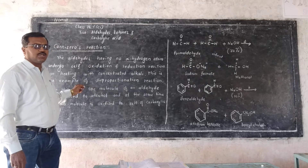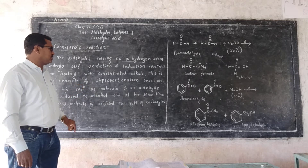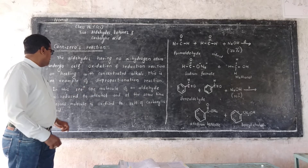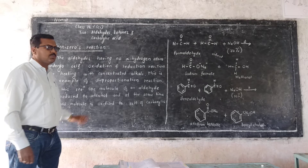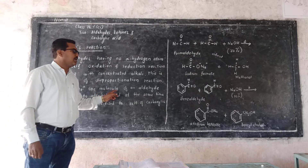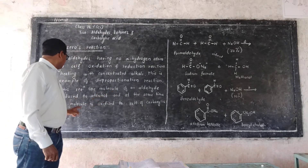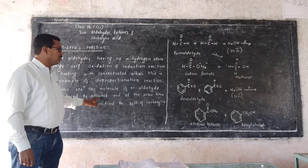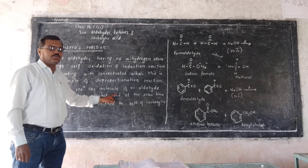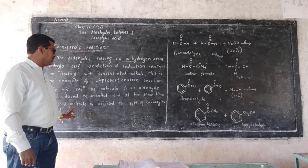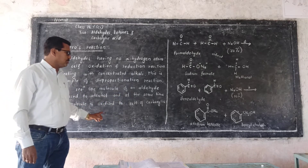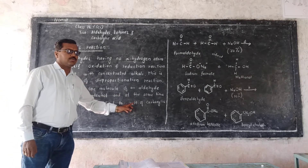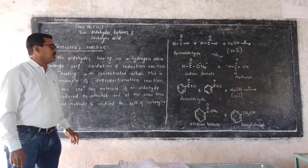This reaction is an example of a disproportionation reaction. In this reaction, one molecule of aldehyde is reduced to alcohol and another molecule of aldehyde is oxidized to a carboxylic acid.